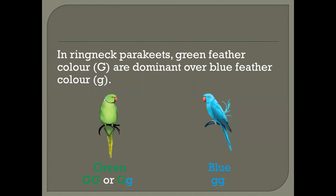In this example, green feather color is dominant over blue feather color. We represent the green allele by the capital letter G and the blue allele by the small letter G. An individual with the green phenotype would either be homozygous — homo meaning the same — having two capital letter Gs, or it could be heterozygous, having a green allele and a blue allele. Because the green allele is dominant, the phenotype still shows as a green bird. But a blue bird, being recessive, can only be homozygous, having two of the recessive alleles.